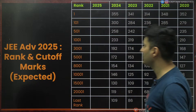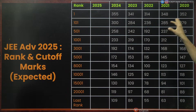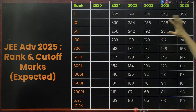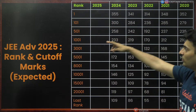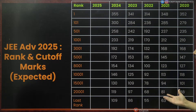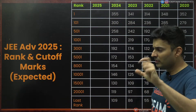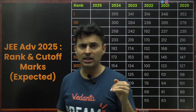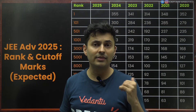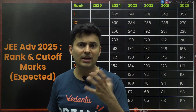Last year, Rank 1 had a very high score; from Rank 101, around 300; Rank 1000 was around 233-258; Rank 10,000 was 146; and the last rank was around 109. However, last year the cutoffs dropped drastically — close to 30%, one of the lowest. This year, a similar drop is expected. If the paper was hard for you, it was hard for everyone, so cutoffs will fall.